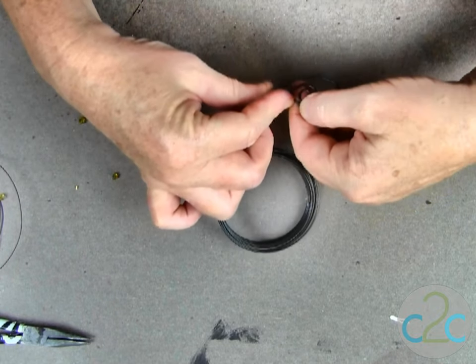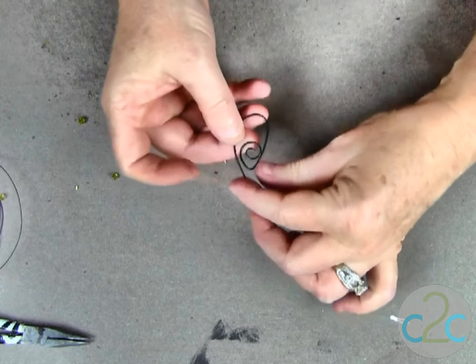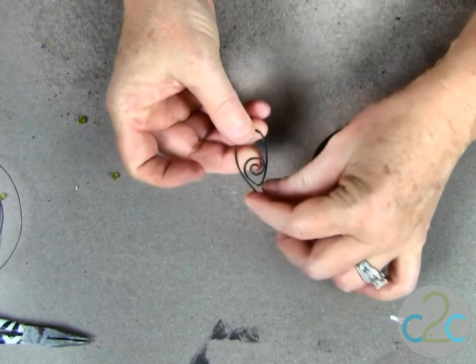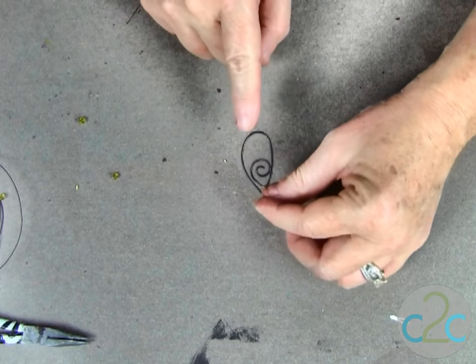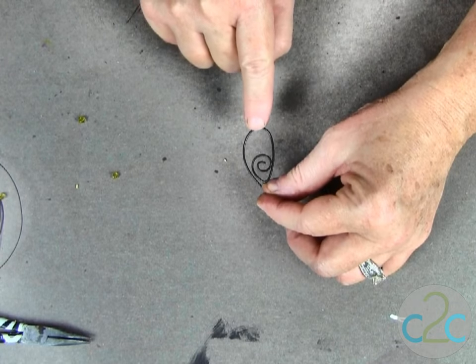Massage that around until you come back to the beginning point and so now what you'll have is kind of an ornate bigger teardrop. This is the big part of the wing.